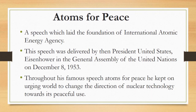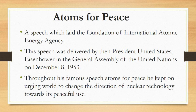Atoms for Peace was basically a speech which laid the foundation of the International Atomic Energy Agency. This speech was delivered by then President of the United States, Eisenhower, in the General Assembly of the United Nations on December 8, 1953. Eisenhower was a military man, a former World War II commander drafted into a presidential campaign. He entered office in 1953 as the first chief executive elected after the advent of the bomb. Throughout his famous speech, Atoms for Peace, he kept on urging the world to change the direction of nuclear technology towards its peaceful use.